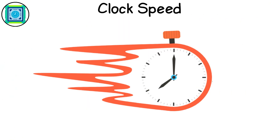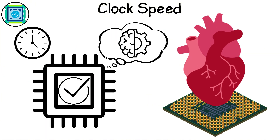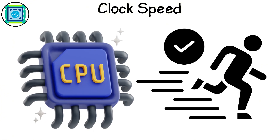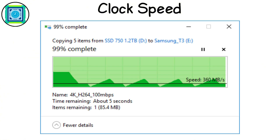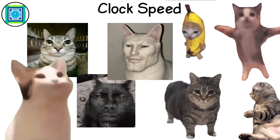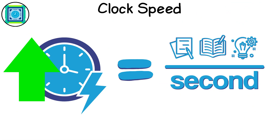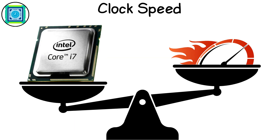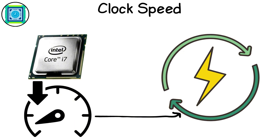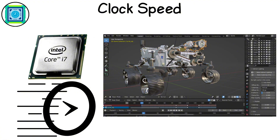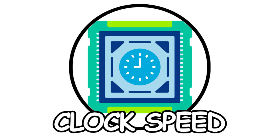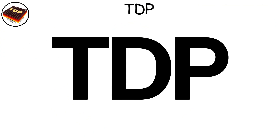Clock speed is your CPU's heartbeat — how fast it ticks, thinks, and gets things done. It's measured in gigahertz, or billions of tiny pulses per second. Every tick is a moment where your CPU performs an action, like moving a file, calculating damage in a game, or loading your cat memes faster. Higher clock speed means more work per second, but also more heat — like running faster on a treadmill. Modern CPUs balance their speed automatically, slowing down to save power or speeding up to handle heavy tasks.